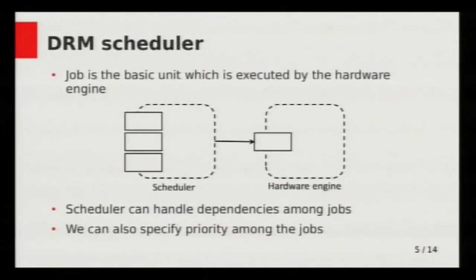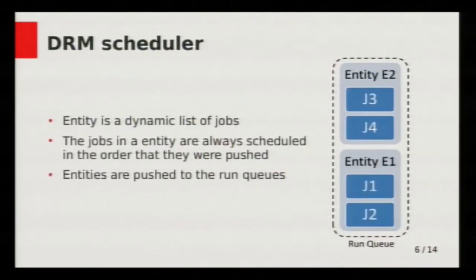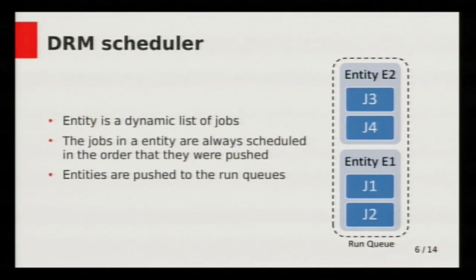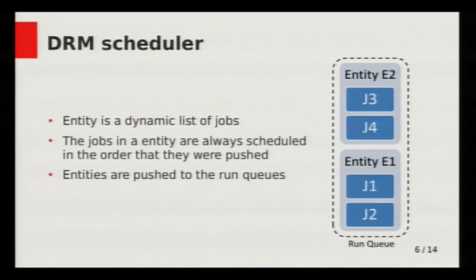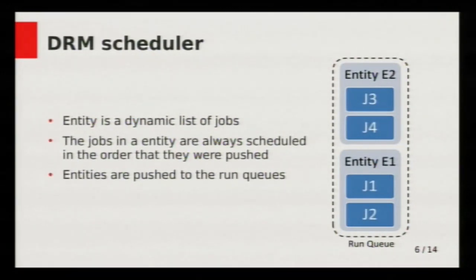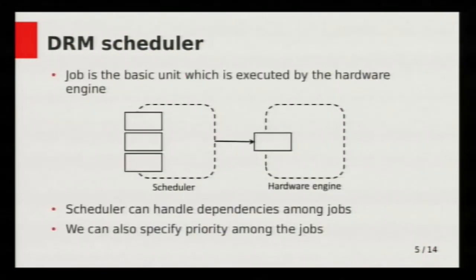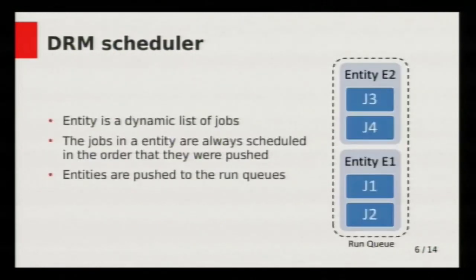Going into a bit more depth on the organization: apart from jobs, the scheduler has something called an entity. Each entity has a dynamic list of jobs — dynamic in that we push jobs to this list and jobs are removed once they are pushed to the hardware queue. The jobs in an entity must be executed in the order they were pushed. We have a queue of these entities which we call the run queue — so the run queue does not contain jobs directly, but contains entities.